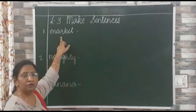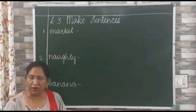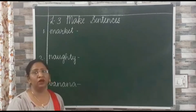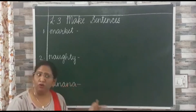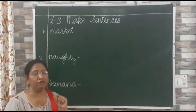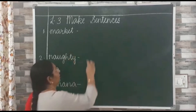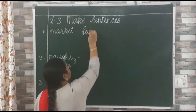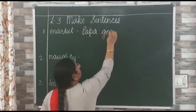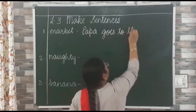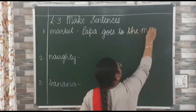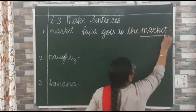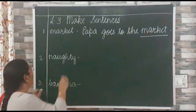Let us start. The first word is 'market'. When you are given any word to make a sentence, that particular word should be there in the sentence — you have to use that word. We can say: 'Papa goes to the market,' or 'Papa buys toffees for me from the market,' or 'There are so many shops in the market.' Every time, we have used the word market. So let us write: 'Papa goes to the market.' Put a full stop, and underline the word on the red line.